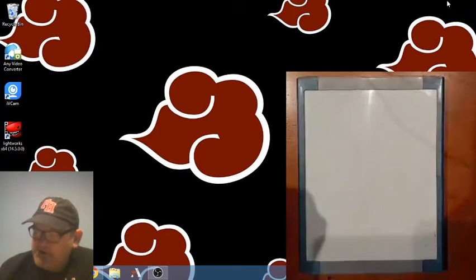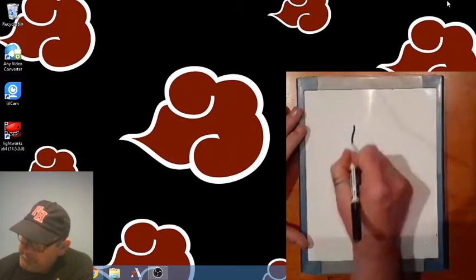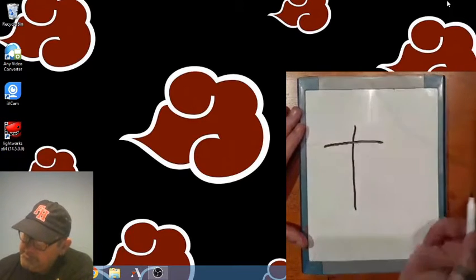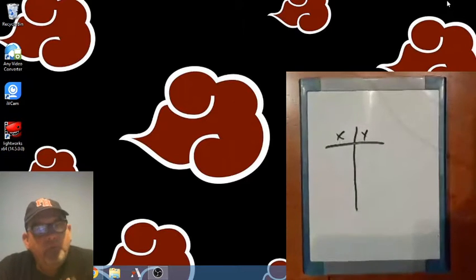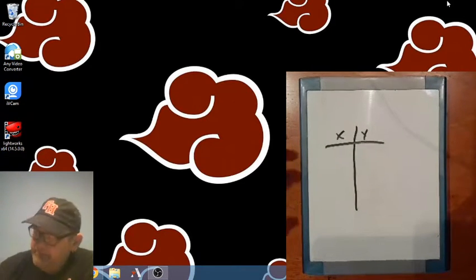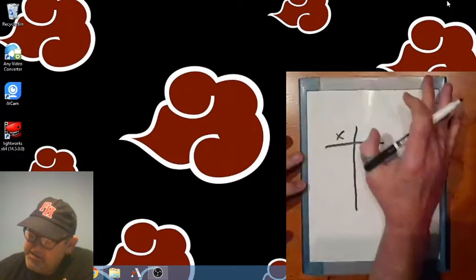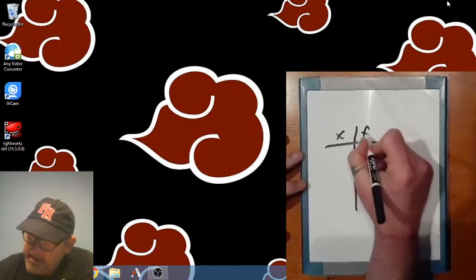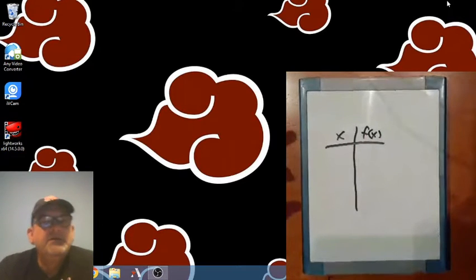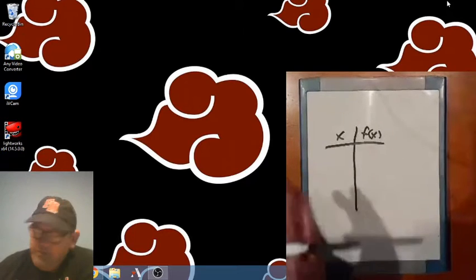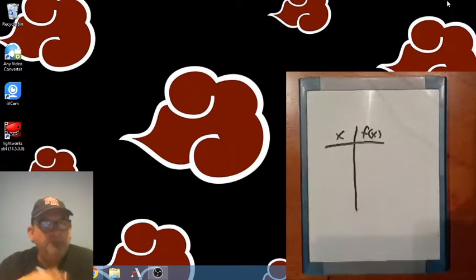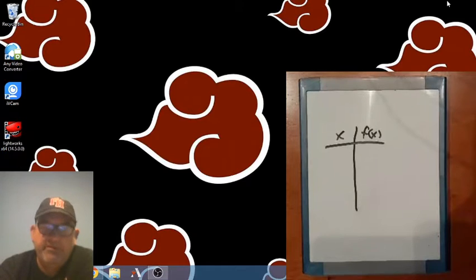All right. So tables, XY tables. Just make a T. X, Y. All right. Don't forget, Y in function form, or when we're dealing with functions, is oftentimes referred to as F of X. So F of X is the same thing as Y. All right. So we're going to show you a few examples of how to fill in a function table. It's really, really simple.